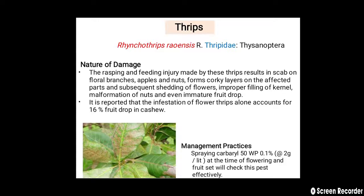The third pest of cashew nut is thrips. The scientific name is Rhynchothrips raoensis, belonging to family Thripidae and order Thysanoptera. Regarding nature of damage, the rasping and feeding injury made by these thrips results in scab on floral branches, apples, and nuts, forming corky layers on affected parts, subsequent shedding of flowers, improper filling of kernel, and malformation of nuts.